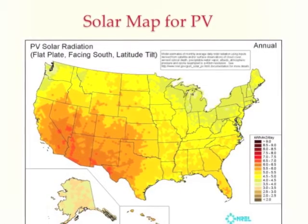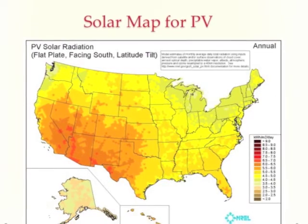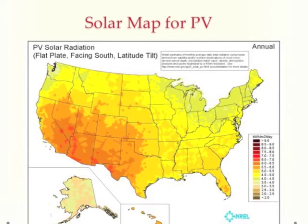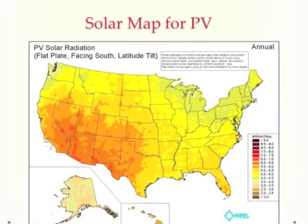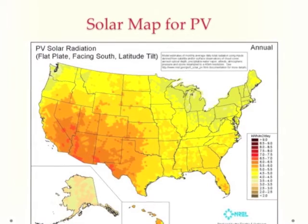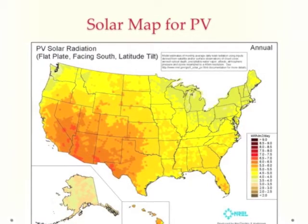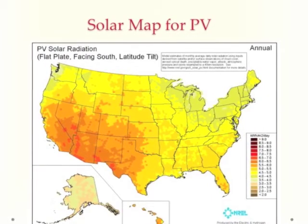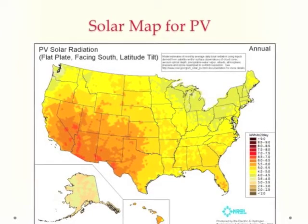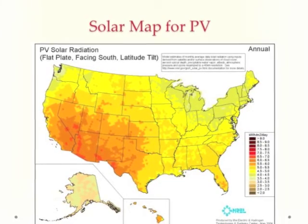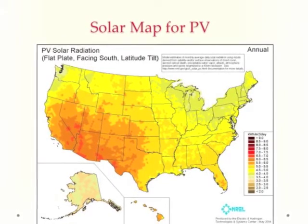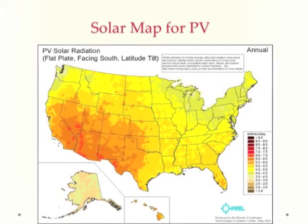The map here for the United States shows solar radiation at different places in the country. As you would guess, in the sunny southwest — Arizona, New Mexico, Southern California — it's sunny most of the time, therefore there's more solar radiation. But there's plenty of solar radiation even in New England or even in Seattle. So solar radiation is a commodity available throughout the country.